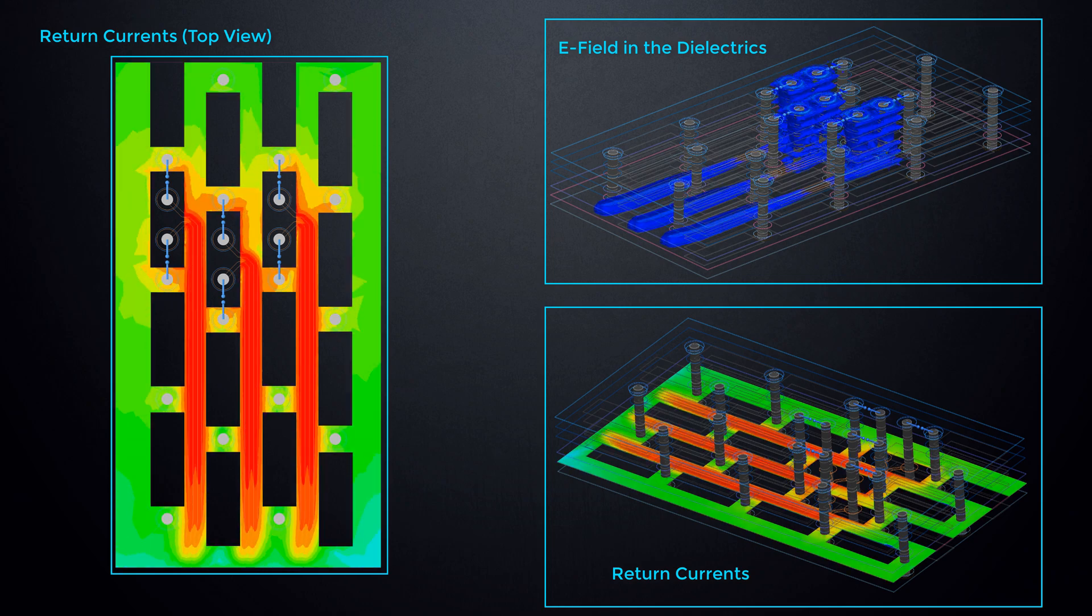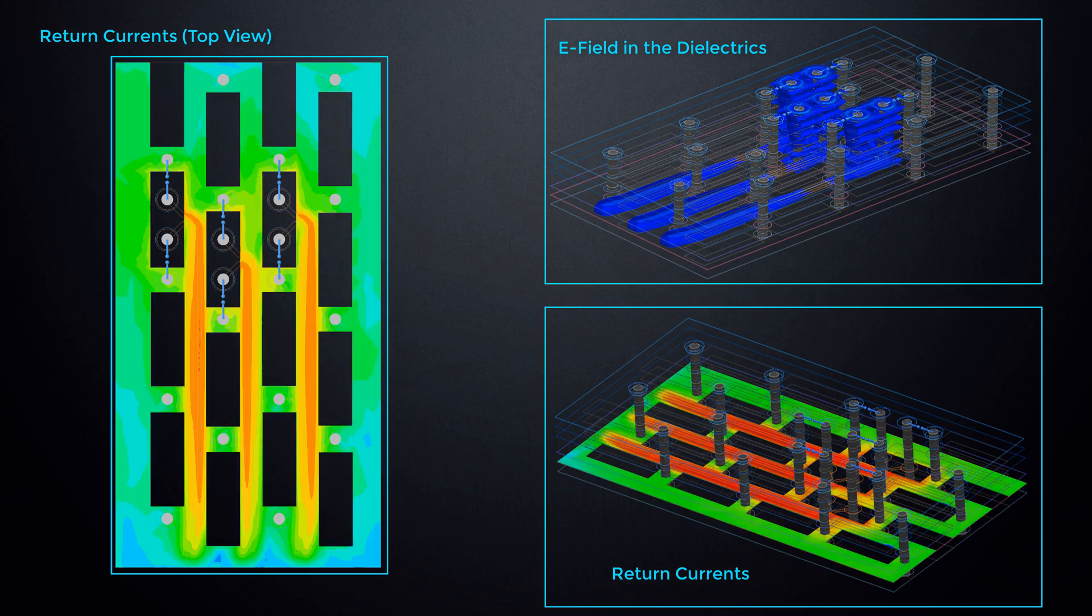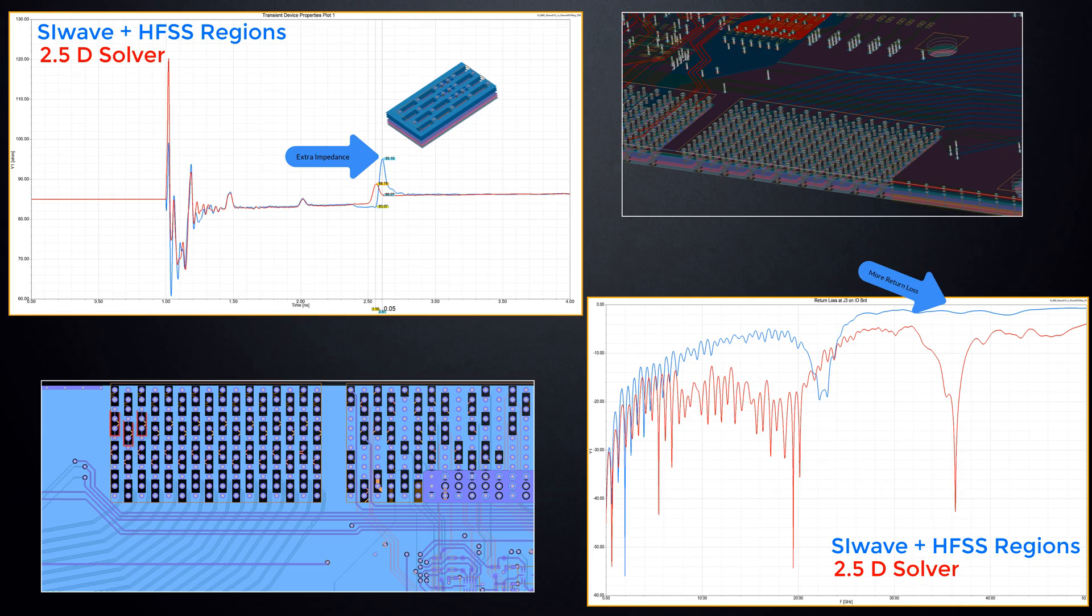Via anti-pads force the return currents into narrower conductive paths, increasing the impedance. SI-Wave with HFSS Regions characterizes the vias and return path more accurately, revealing extra impedance mismatch and more return loss missed by the 2.5D solver.